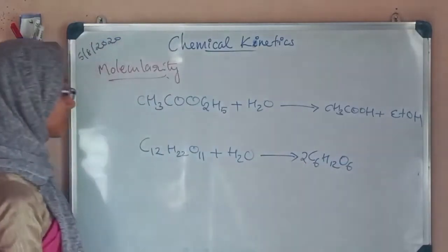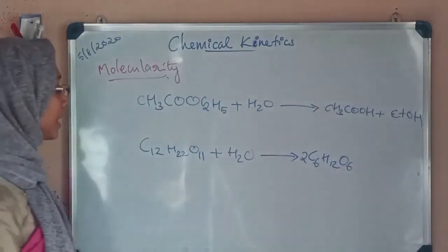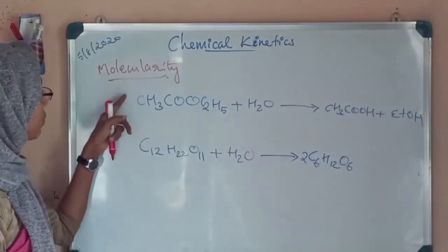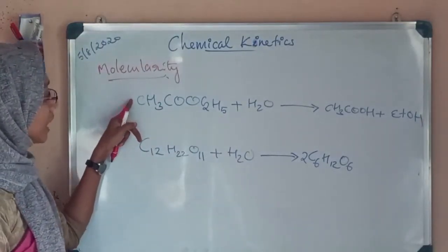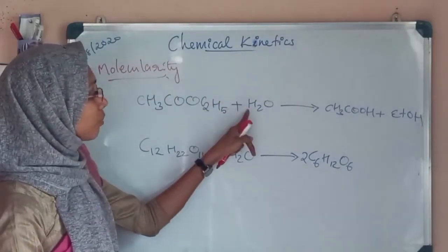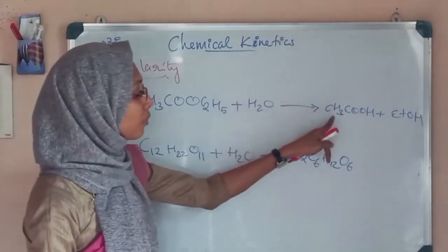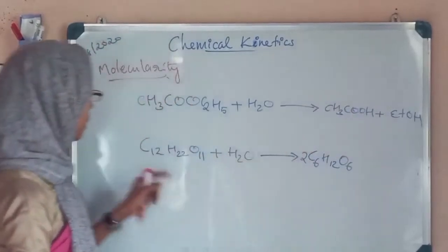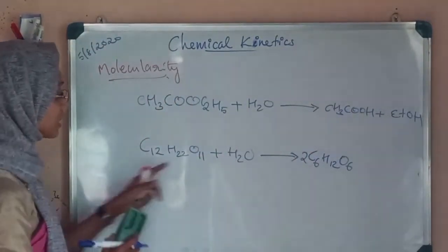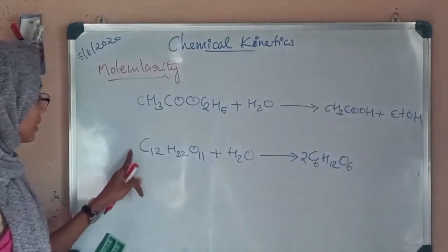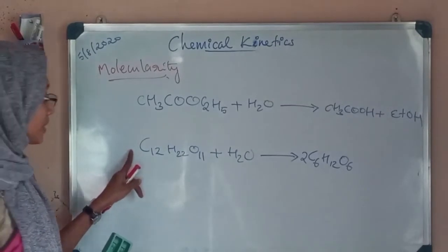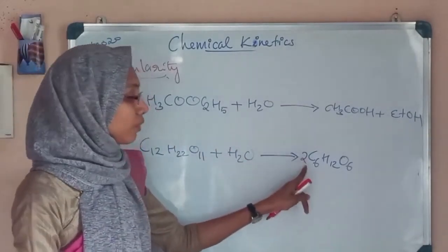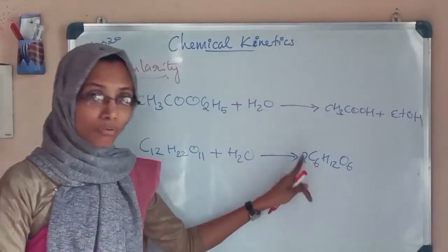The products are two molecules of C6H12O6. Here the molecularity is equal to 2 — that is, one molecule of ester reacts with one molecule of water to give one molecule of acetic acid and one molecule of ethanol. For sucrose hydrolysis, one molecule of sucrose reacts with one molecule of water to give one molecule of glucose and one molecule of fructose.